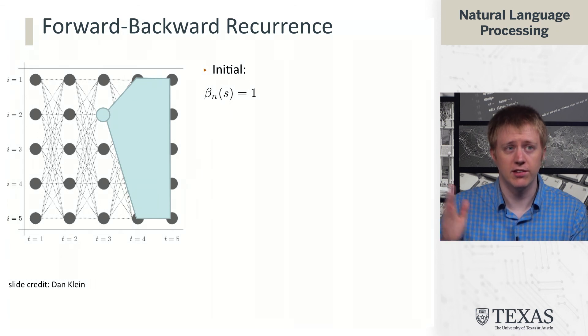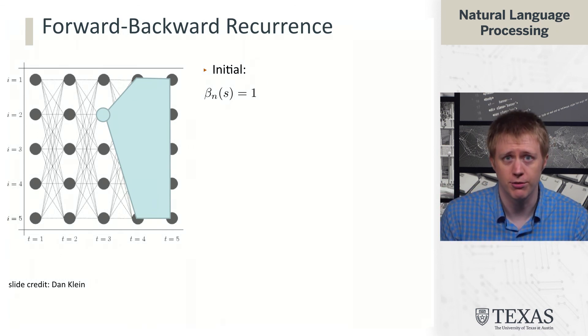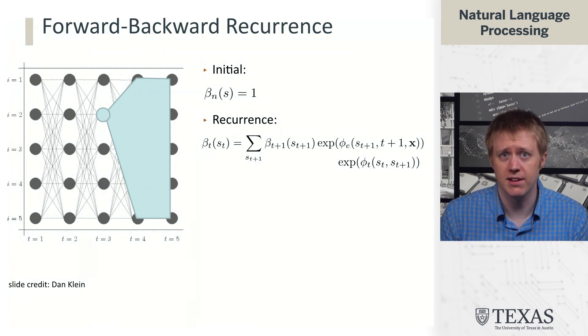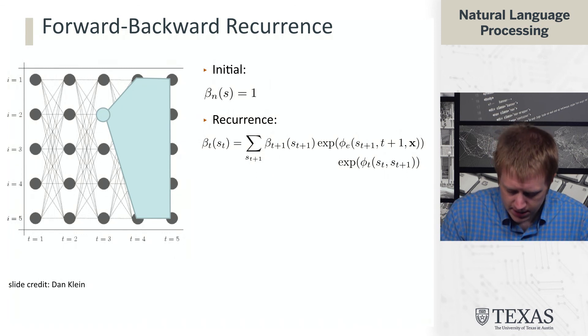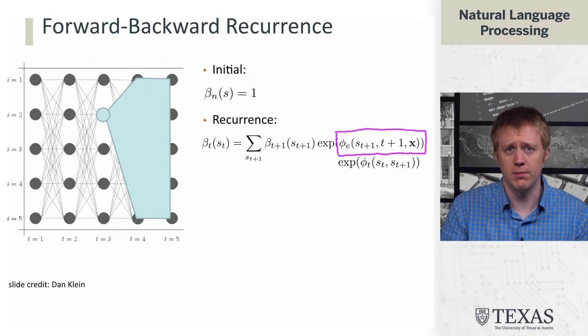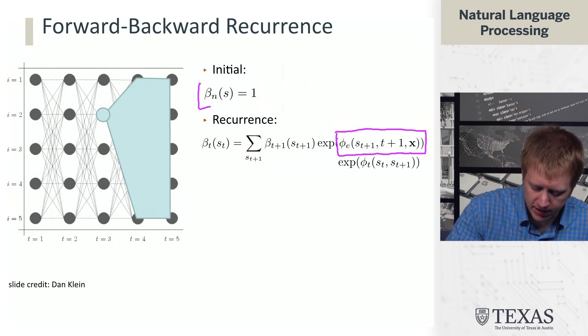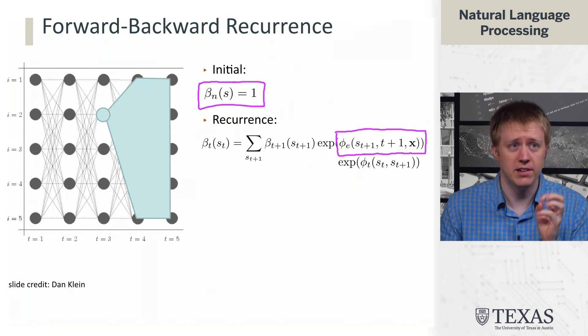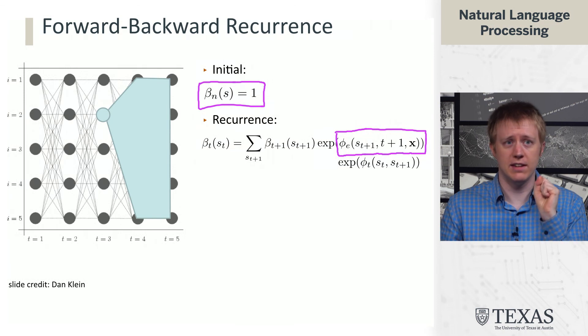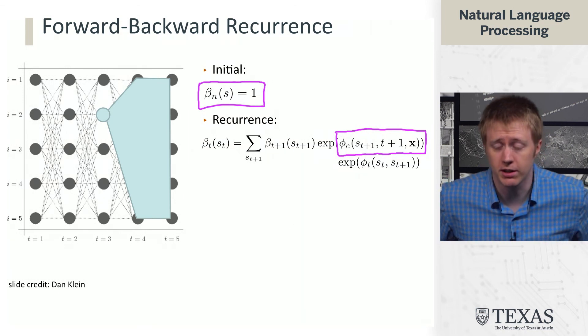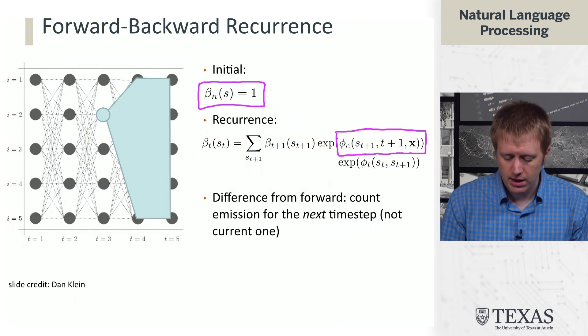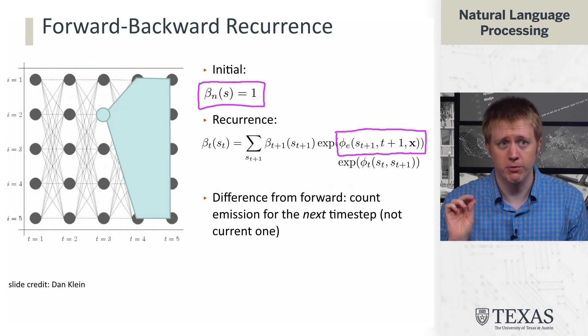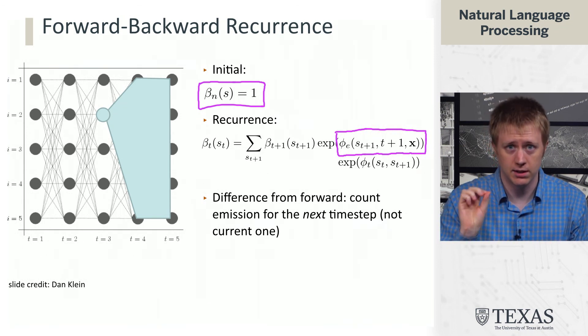The backward recurrence is going to be the same kind of idea, just in reverse. The one key difference is that in the recurrence here, the emission features that we are using are based on the next time step rather than the current time step. And that is reflected in the initial distribution as well, which doesn't look at the emissions for the last step, but instead just assigns a placeholder value of one everywhere here. So this is an important distinction from the forward algorithm, and we're going to see in a little bit why this is important.